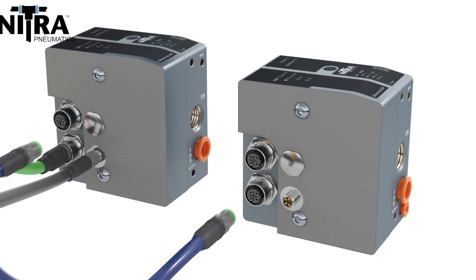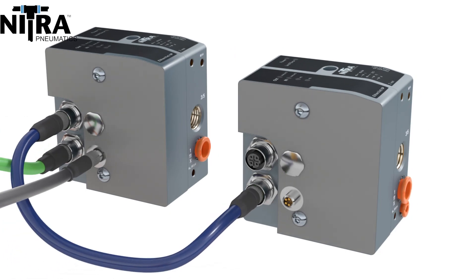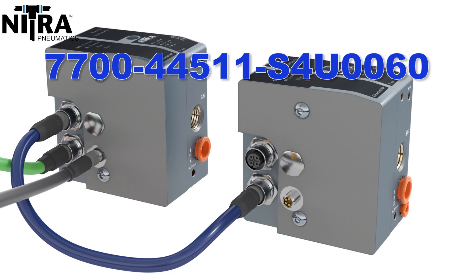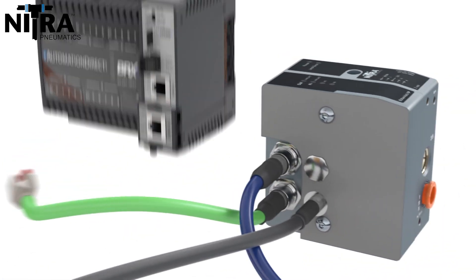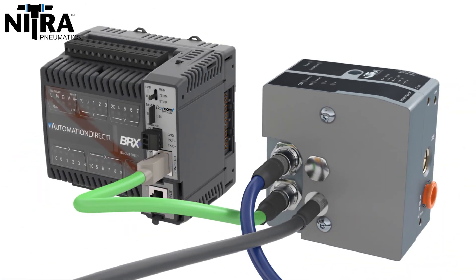The Ethernet IP modules can be daisy-chained by using one of our cables, like this model. AutomationDirect offers M12 Ethernet cables in several lengths with straight and 90-degree connectors. The number of Ethernet modules daisy-chained are limited by the number of IP addresses in a subnet. Don't forget to grab one of the communication Ethernet cables and power cables for the Ethernet modules. This cable connects from the control device to the first module on the communication drop.